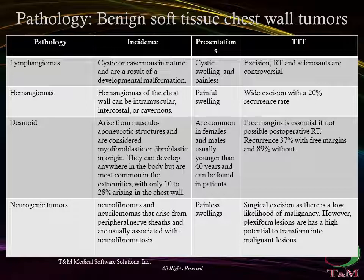Cutaneous nevi, lipomas, hemangiomas, lymphangiomas, and neurogenic tumors are benign lesions found in the soft tissue of the chest wall. They are treated with wide local excision to negative margins to avoid local tissue recurrence. Intercostal hernias have also been reported that can be confused with benign soft tissue lesions, mandating appropriate radiographic confirmation. Lymphangiomas of the chest wall are usually cystic or cavernous in nature and result from a developmental malformation. They can be located within the mediastinum or the chest wall itself. Preoperative CT imaging is essential to assess the extent of the lesion.